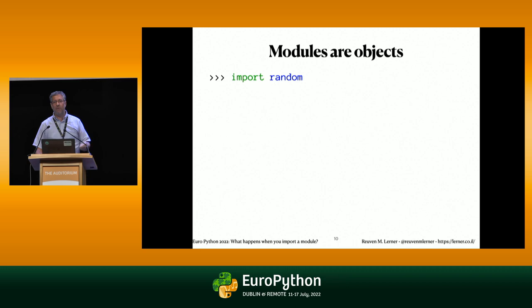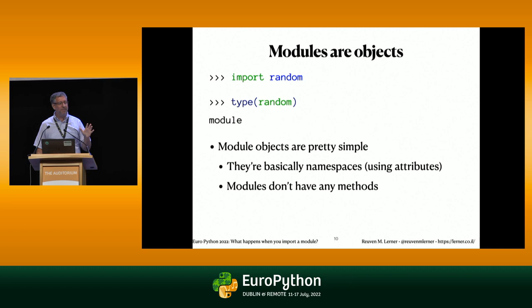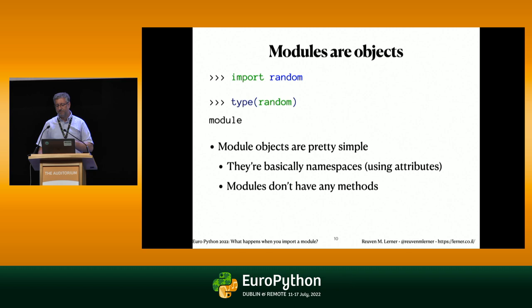Let's think about modules as objects. If I say 'import random' and then ask Python what is the type of random, it's a module object. We have module objects just as we have strings, lists, dicts, and functions. Module objects are actually really, really simple — of all the objects in Python, they don't do that much. They're basically containers, namespaces. We use attributes to set the names that are going to be there. They don't have any methods. If I have a module object, all I'm using it for is to keep track of the names defined in there.